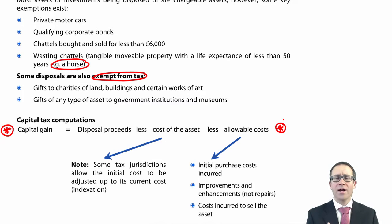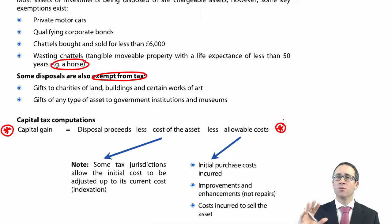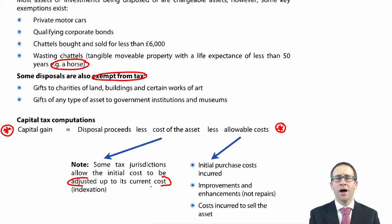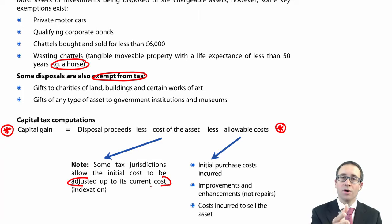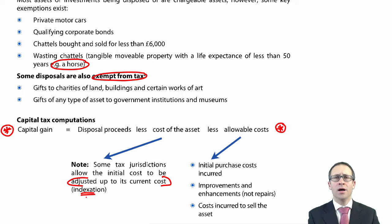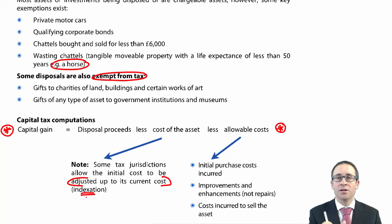Just be careful: the cost of the asset is a historic cost — what you paid for it several years ago. What you can do is adjust that cost up to its current cost, to look at what it would cost today compared to what you have sold it for today. That's referred to as a process of indexation. Within the exam at this level, you'll be given a percentage by which the current cost has increased.